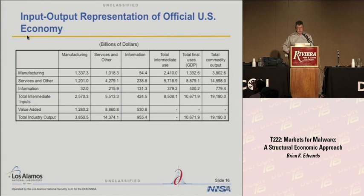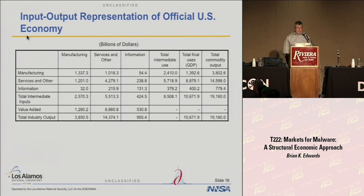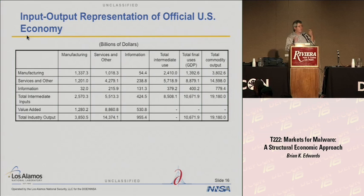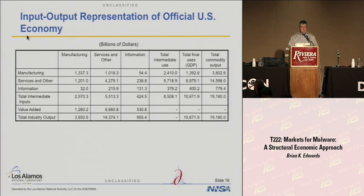If you take the first three columns and sum them up, you get the total intermediate use — the total intermediate input purchases that they buy from these industries. Along with what we call final uses — which is GDP, the consumption, investment, government spending, and net exports figure of $1.392 trillion — the total output actually includes all that intermediate production as well. So when you add those columns and get a total commodity output of $3.8 trillion, that's really the number we look at. This is an input-output representation of the actual economy, just a very highly aggregated version.